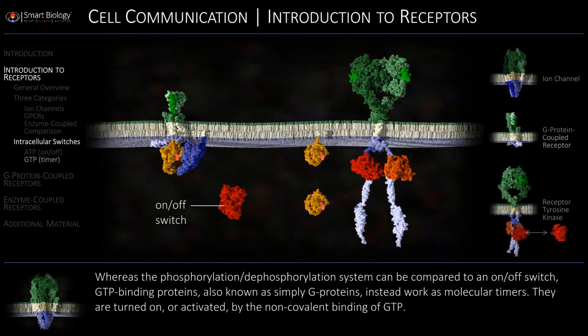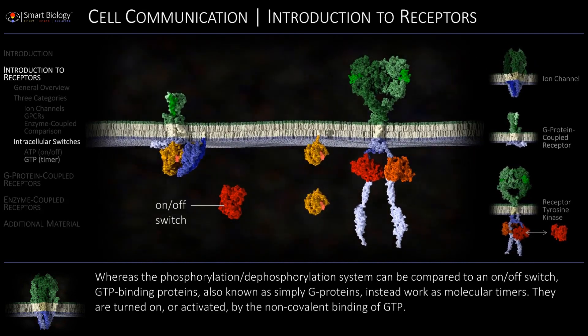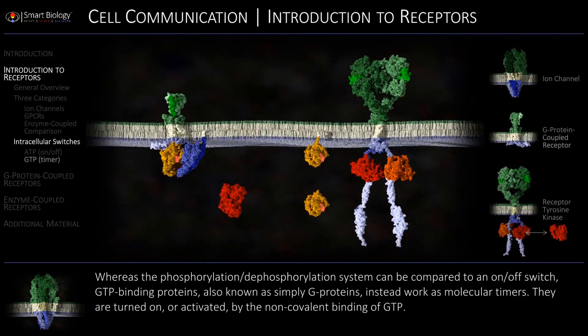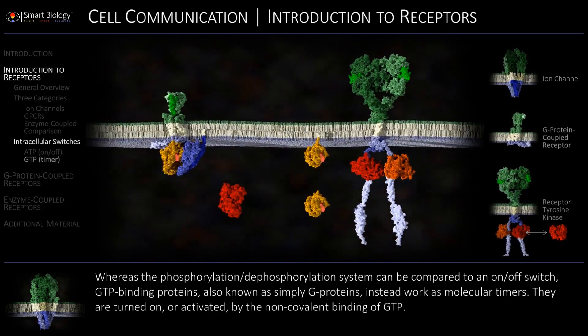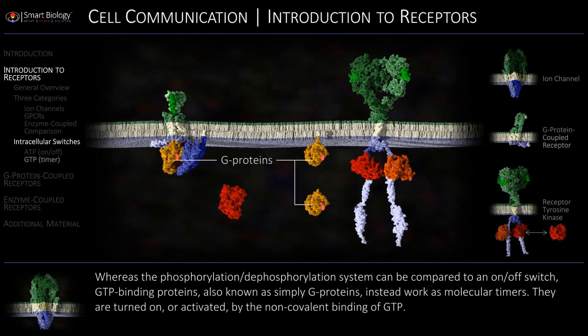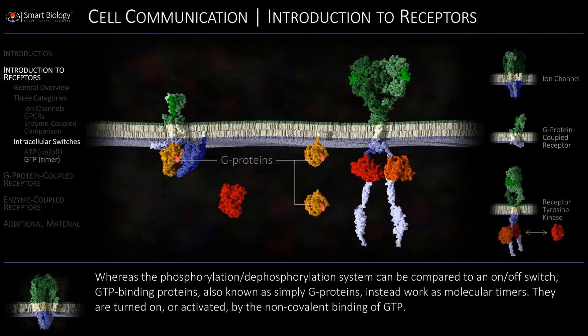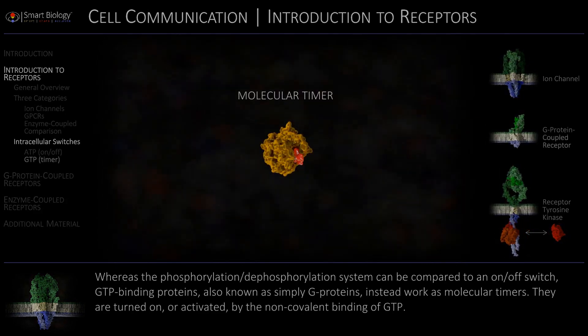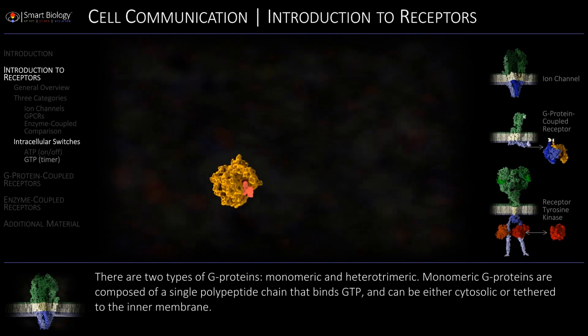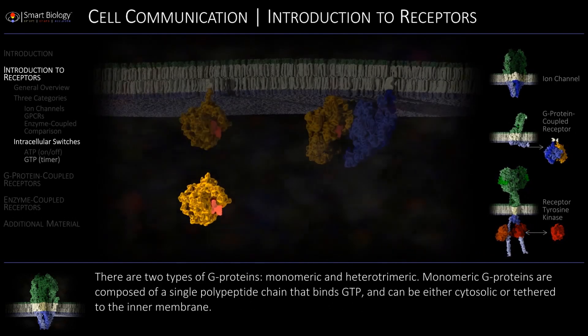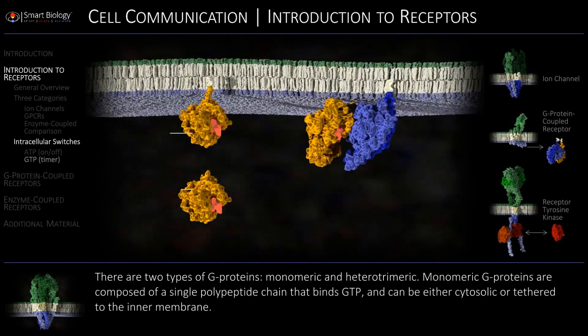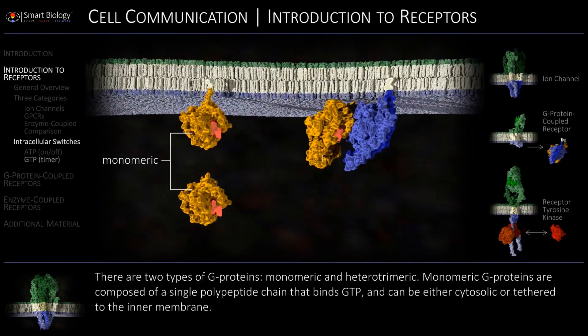GTP-binding proteins, also known as simply G-proteins, instead work as molecular timers. There are two types of G-proteins: monomeric and heterotrimeric.